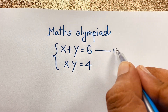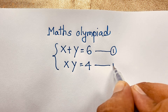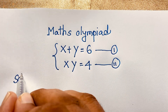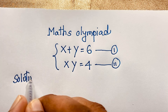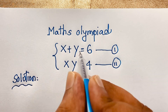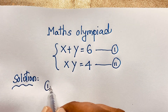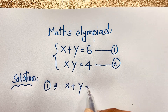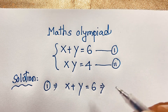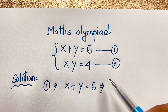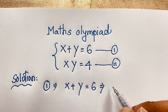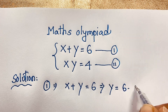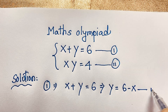This is our first equation and this is our second equation. Our math solution begins with our first equation: x plus y is equal to 6. If I move x to the other side, it will be negative x. So, y is equal to 6 minus x. This is our third equation.